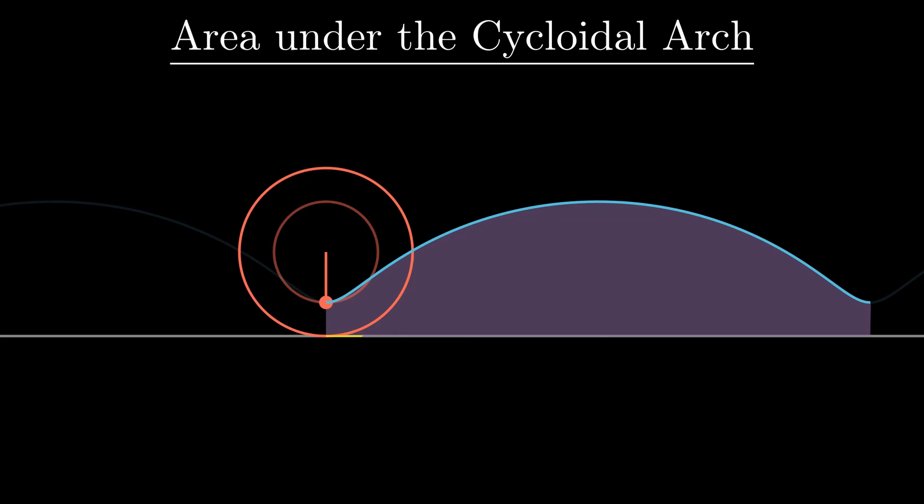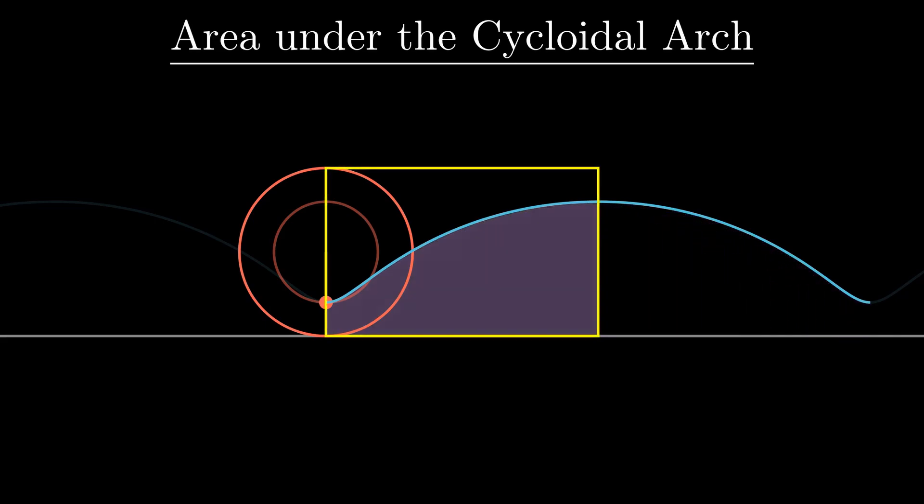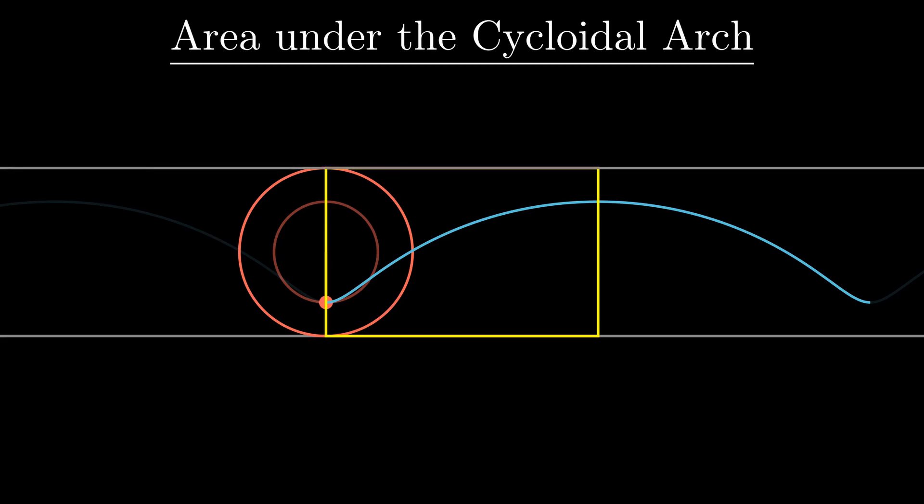So, reiterating, we are interested in the area spanned by one arch of the cycloid. As the arch is symmetrical, we will focus only on the first half of this arch. Now comes the interesting point.